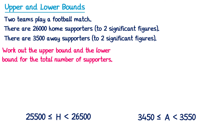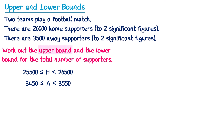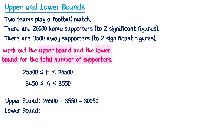Taking these two error intervals, we've been asked to work out the upper and lower bounds for the total number of supporters. For the upper bound we add the upper bound for home supporters — 26,500 — and the upper bound for away supporters — 3,550 — giving 30,050. For the lower bound we add the lower bound for home — 25,500 — and the lower bound for away — 3,450 — giving a lower bound of 28,950. Since the question only asks for the upper and lower bounds, we don't need to write this as a full error interval.